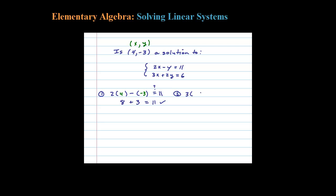The ordered pair has to solve both equations to be a solution to the system. So I put the blank parentheses: 3 times x, x is 4, and 2 times y, y is -3. Substituting in those values, we're checking if this equals 6. So 12 minus 6 — that certainly equals 6. Since (4, -3) works for both equations, that ordered pair is a solution, and the answer is yes.